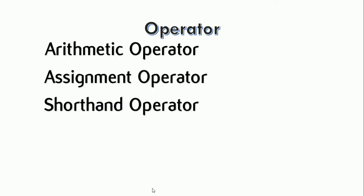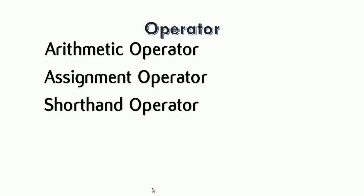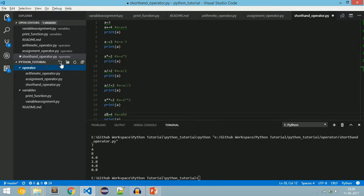In the last video we saw arithmetic assignment and shortened operators. In this video we will see about bitwise, comparison, logical, and identity operators in Python. Bitwise operators are handy if you want to operate at the bit level on a binary value. We will see those with the example file bitwise_operator.py.